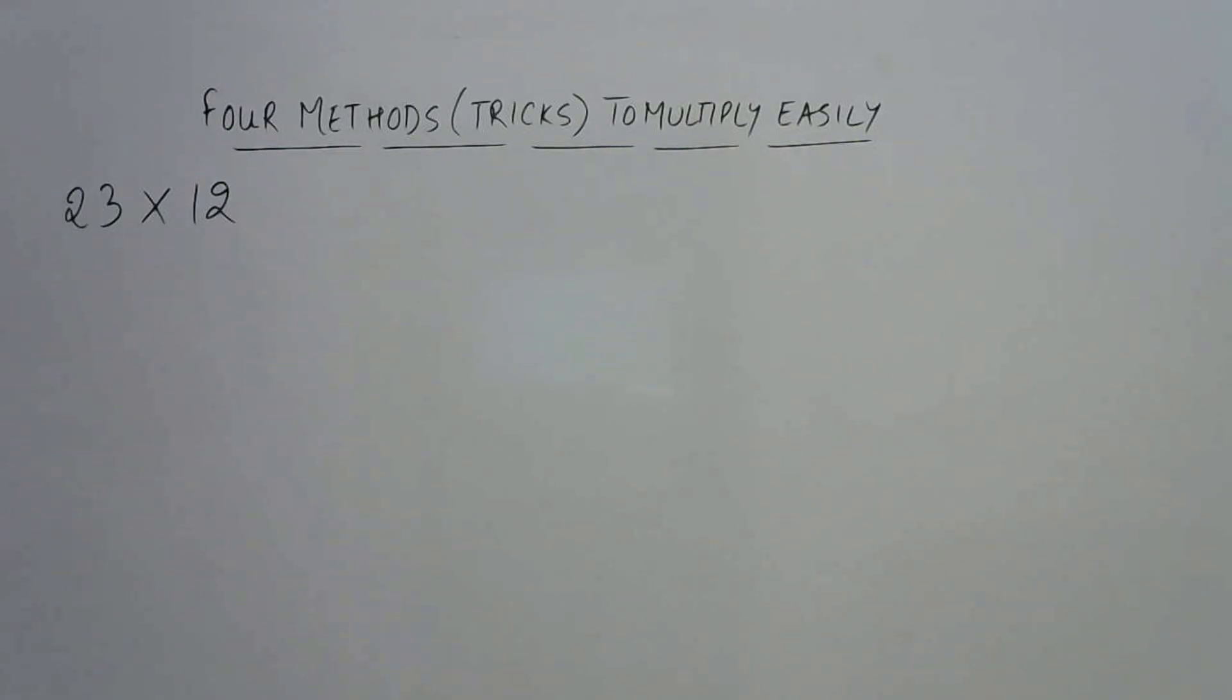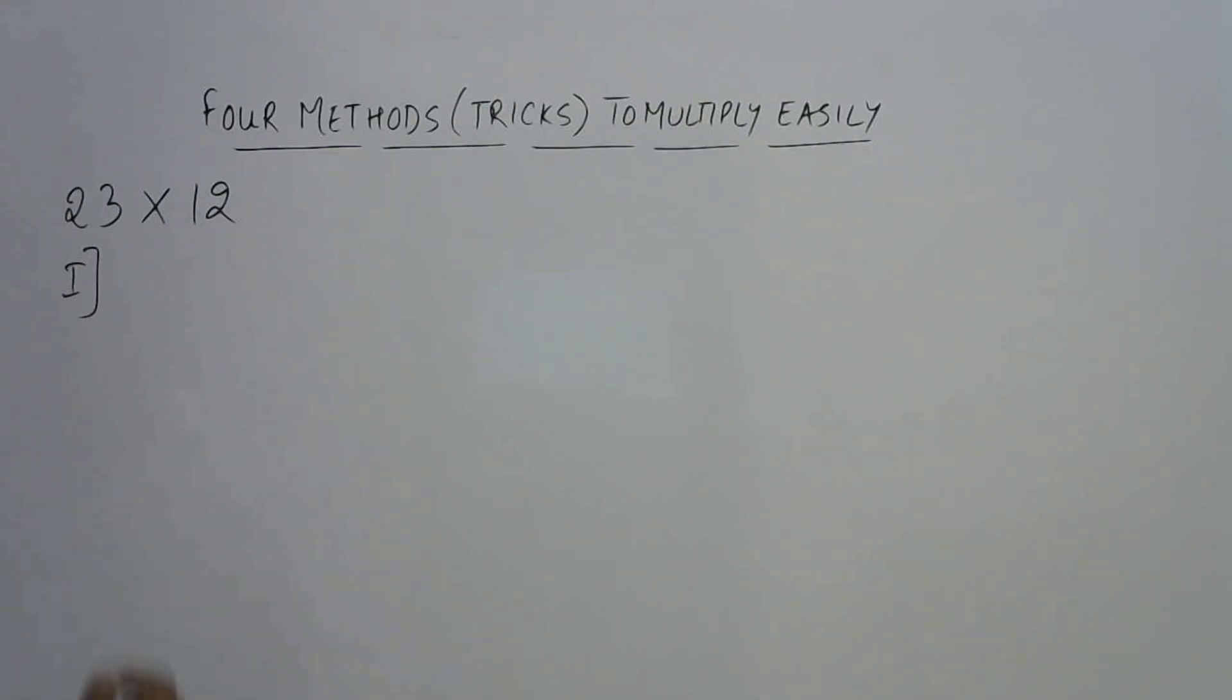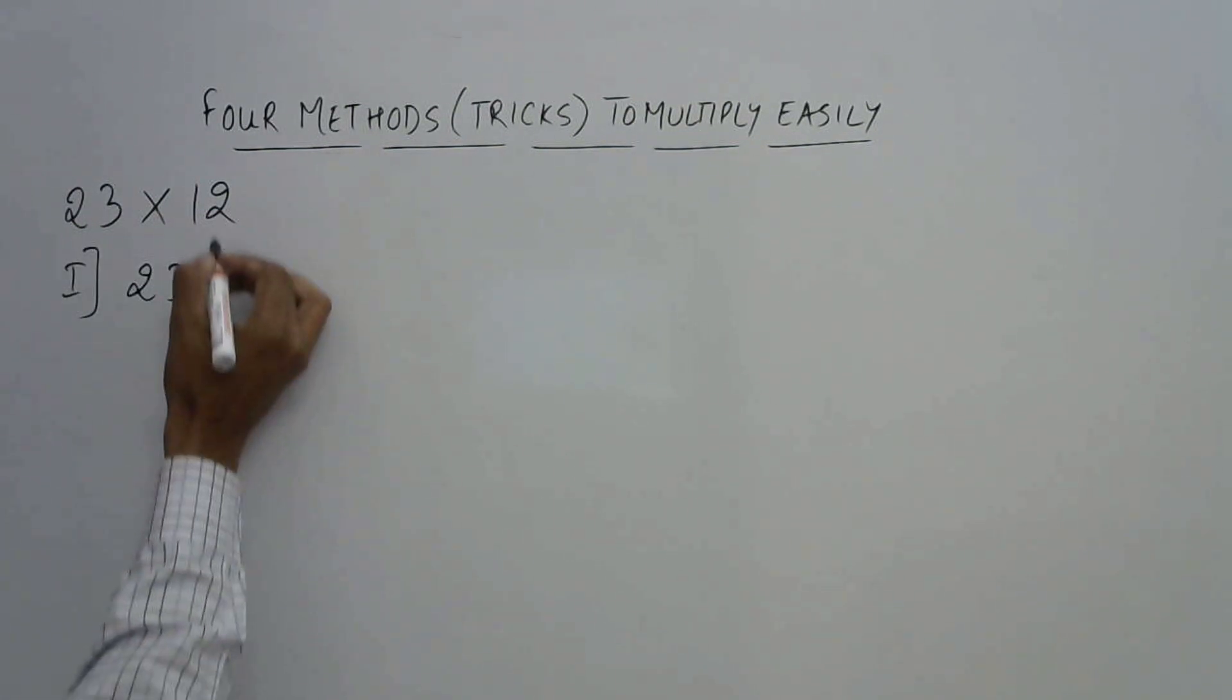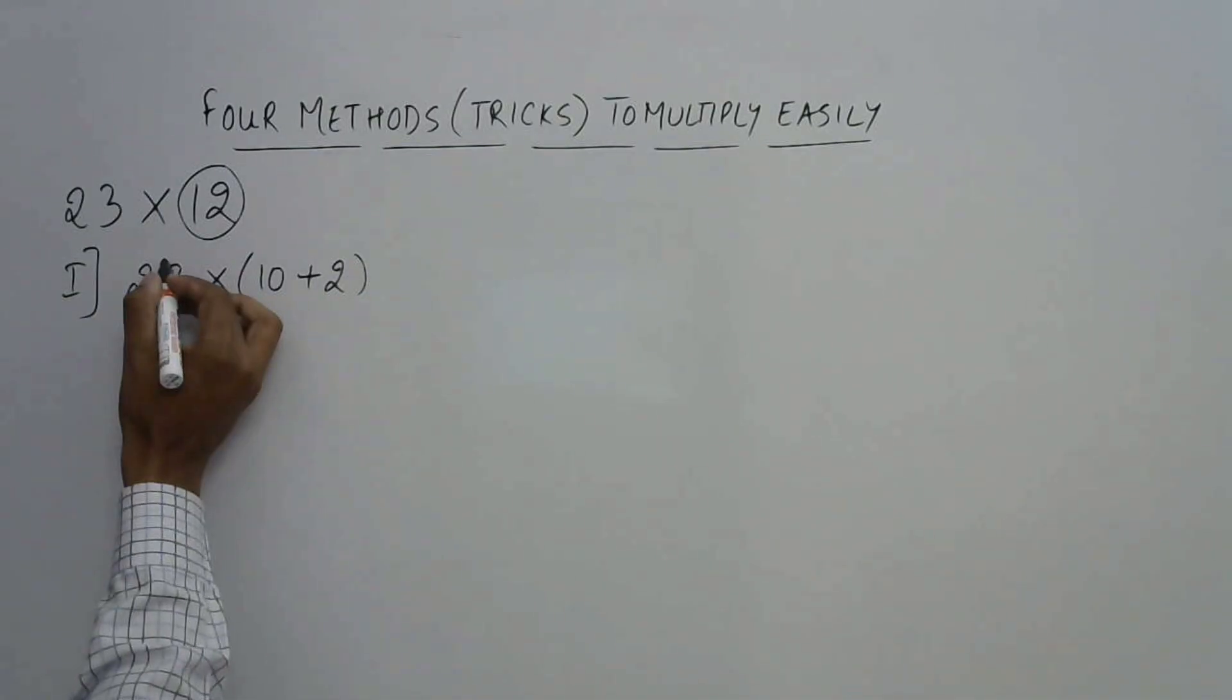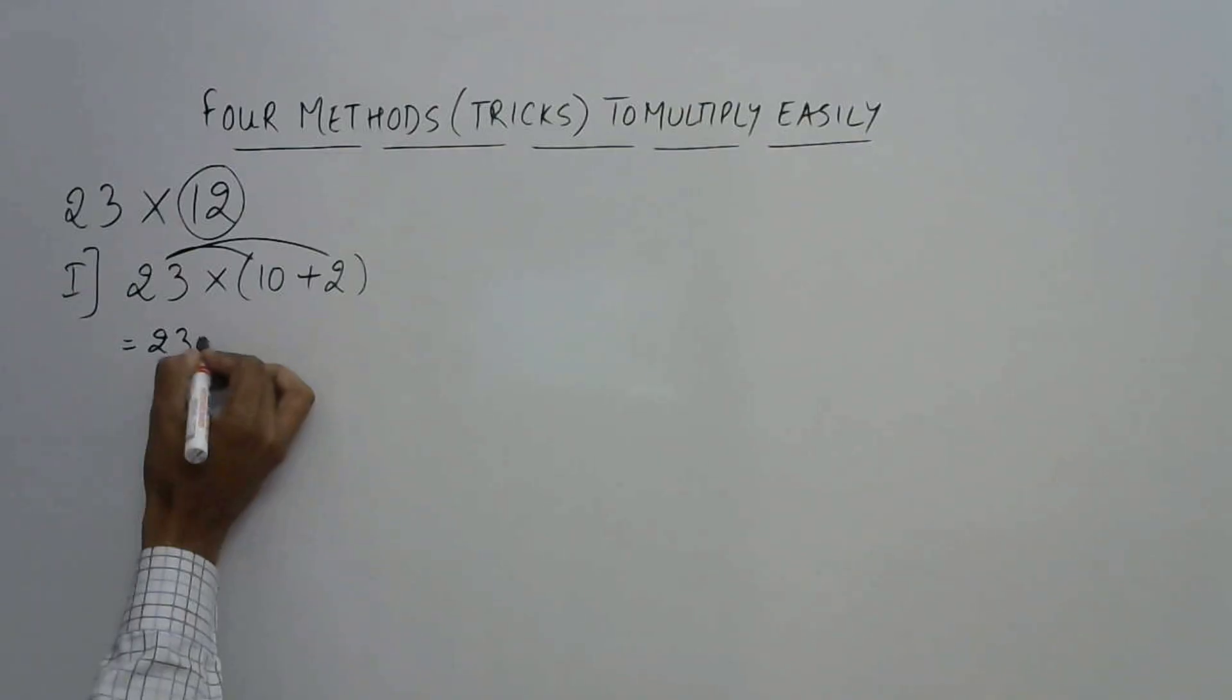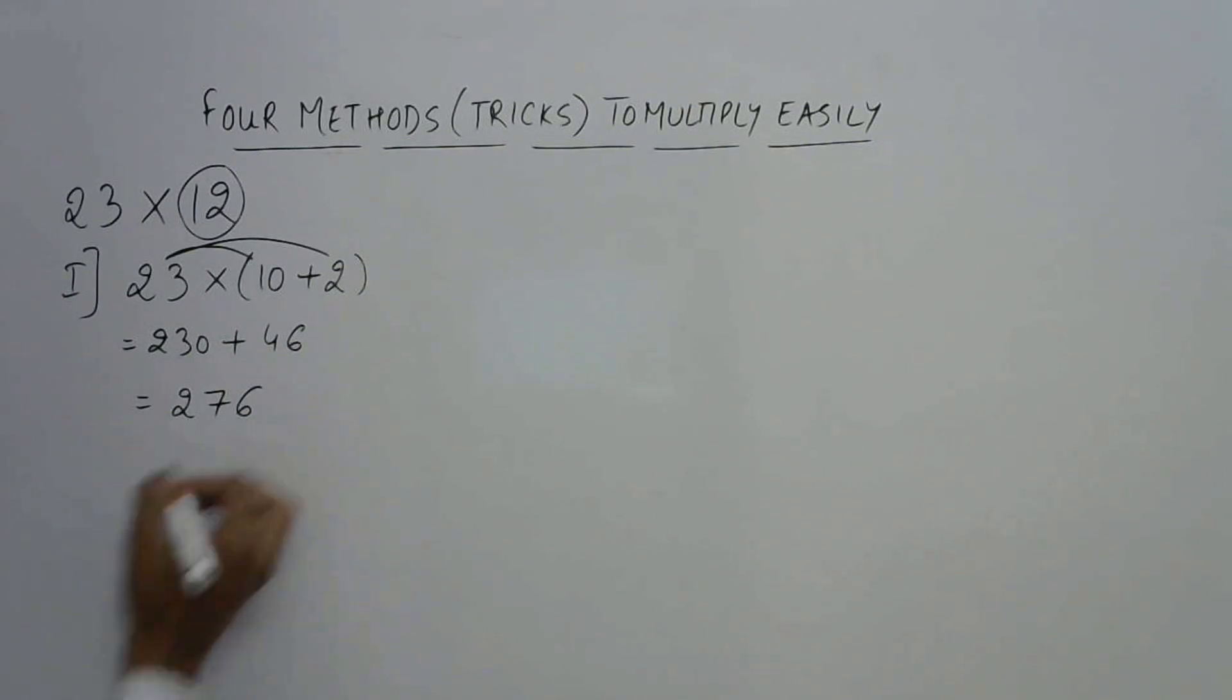Now, see traditional method you all know. The first method for multiplying these two numbers 23 and 12 is to use the distributive property. Using the distributive property, if you take 23 as it is and check this number 12 which is close to the round figure 10 and write it as 10 plus 2, then multiplying 23 by 10 and 23 by 2 will be very easy. So this will be 230 plus 23 times 2 is 46 which will give you the answer 276.